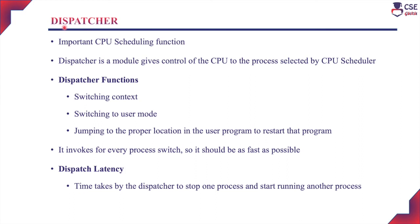The next important component is the dispatcher. The dispatcher is the most important function of CPU scheduling. The CPU scheduler selects a job, and the dispatcher is the module that gives total control of the CPU functions to the selected process. The dispatcher functions include switching context — when the CPU switches from one process to another during execution, that is called switching.